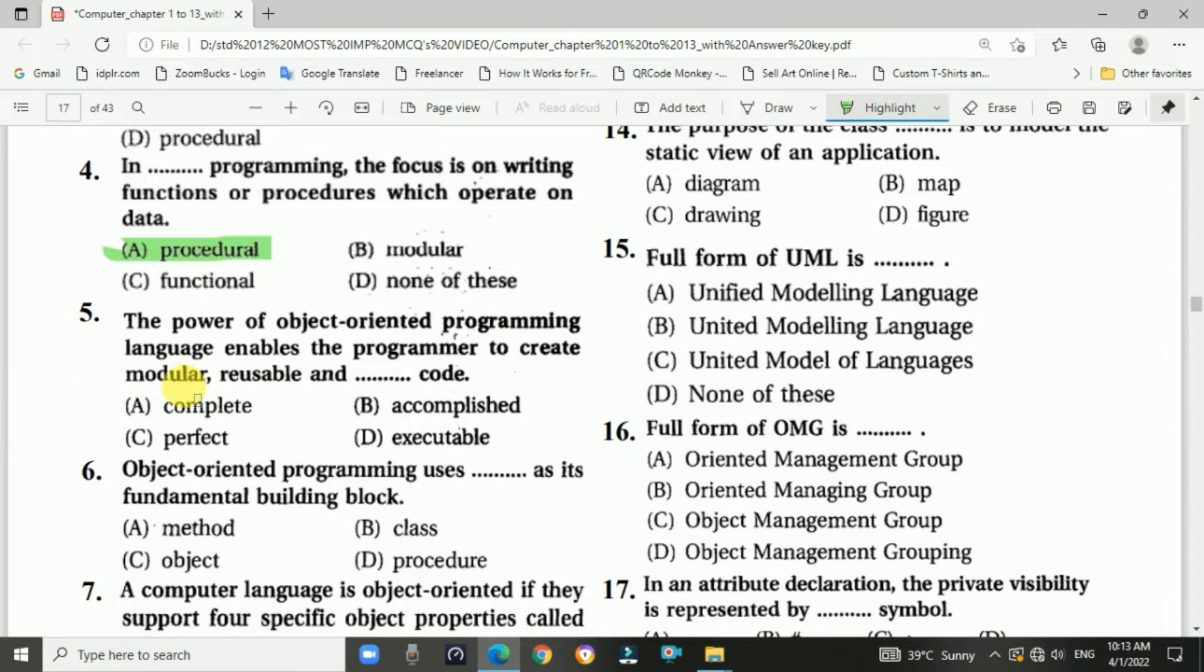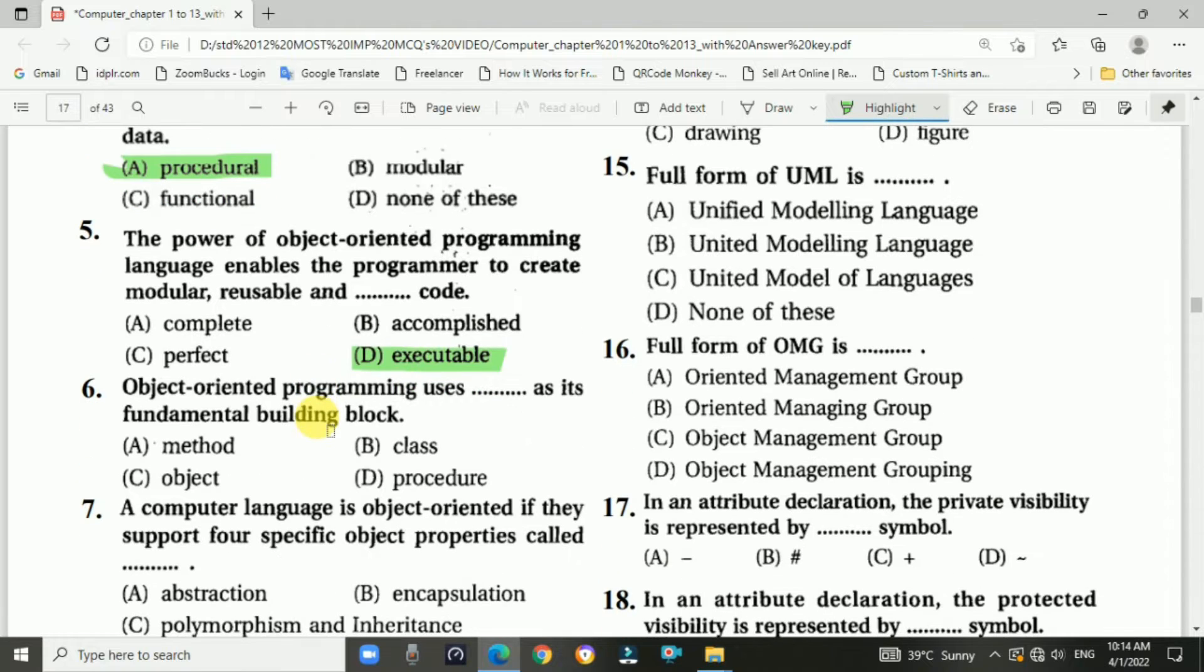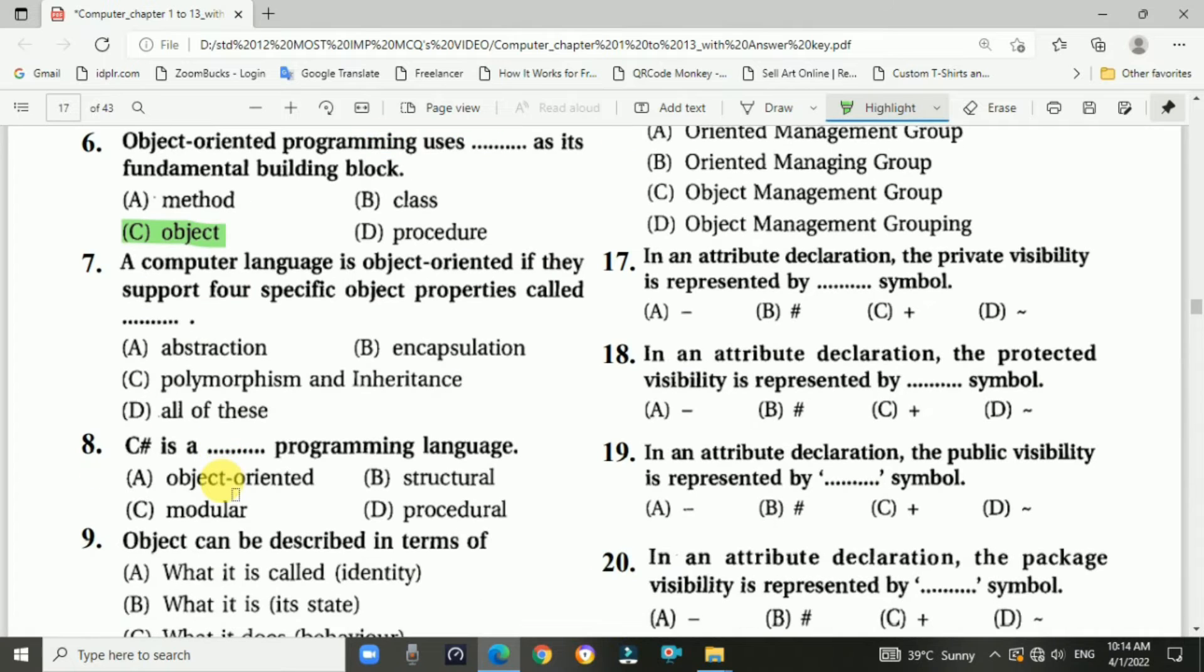Question number five: The power of object-oriented programming language enables the programmer to create modular, reusable, and blank code. Answer is executable code. Question number six: Object-oriented programming uses blank as its fundamental building block. Answer is C, object.